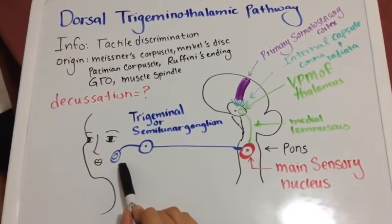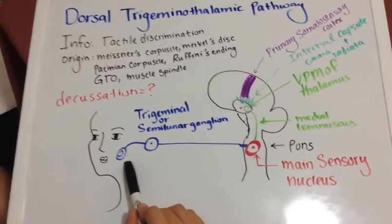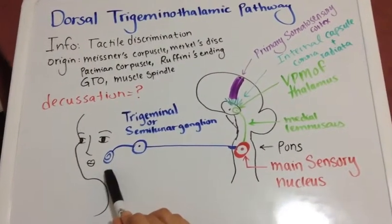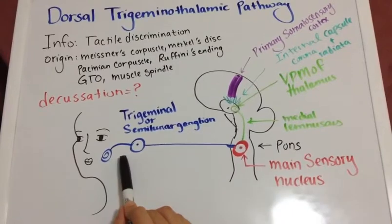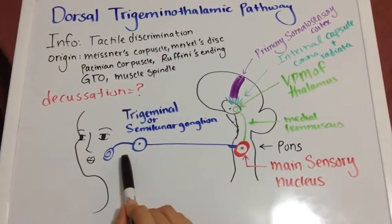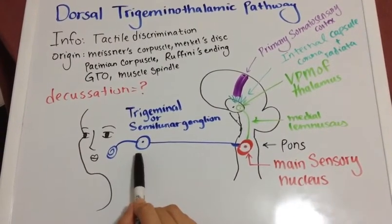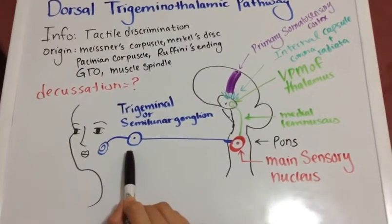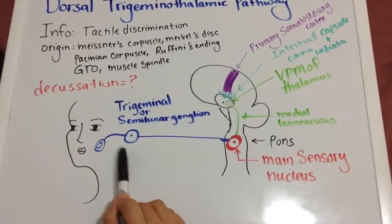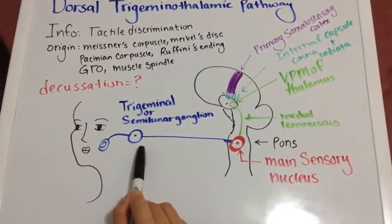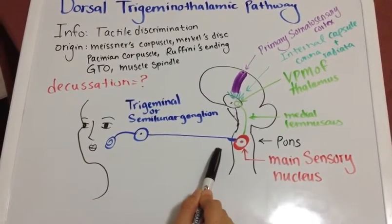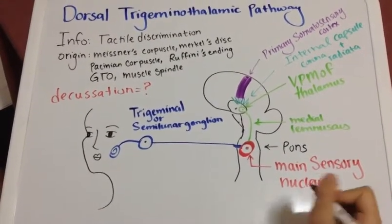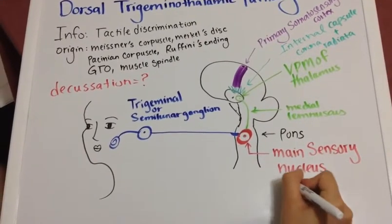You are going to have a tactile stimulus over here. The information is sent via the fibers to the trigeminal ganglion, which has pseudounipolar neurons — that's why it has two extensions. The information goes straight into the pons, and you will have your first synapse in the main sensory nucleus.